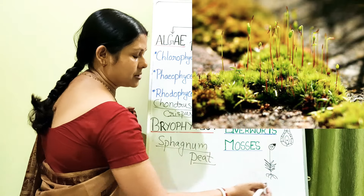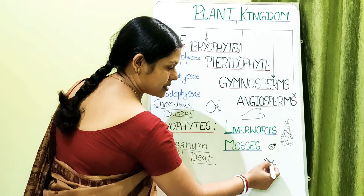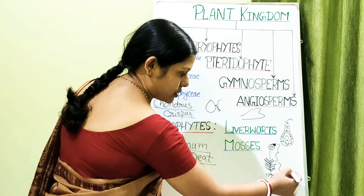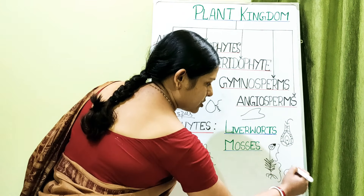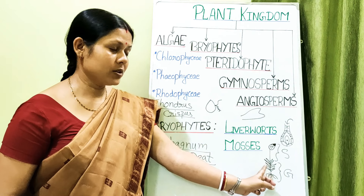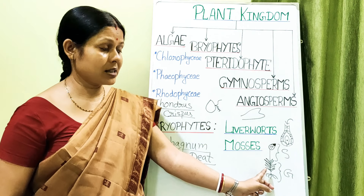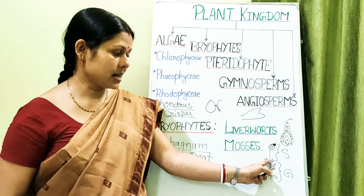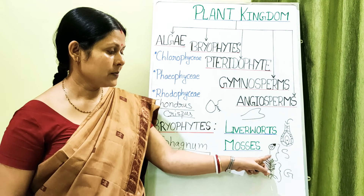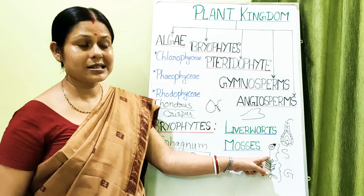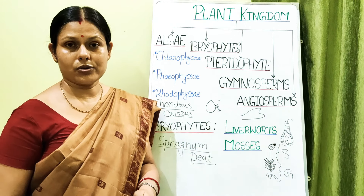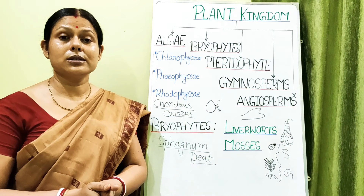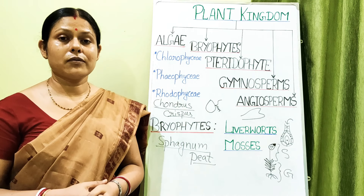In mosses, the lower leafy part of the plant body is the gametophyte and the upper part — including the capsule — is the sporophyte, which is dependent on the gametophyte. The sporophyte has three structures: the foot inserted into the gametophyte, the seta (a long stalk), and the capsule containing spores.